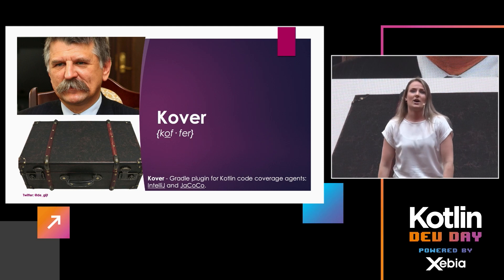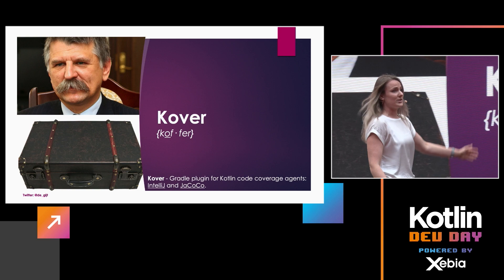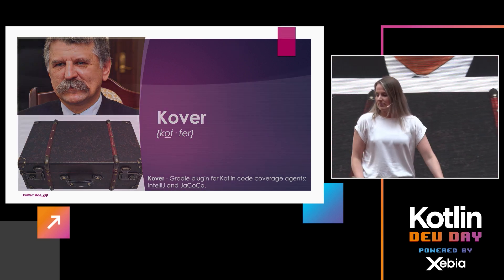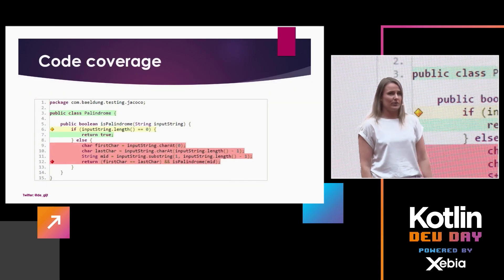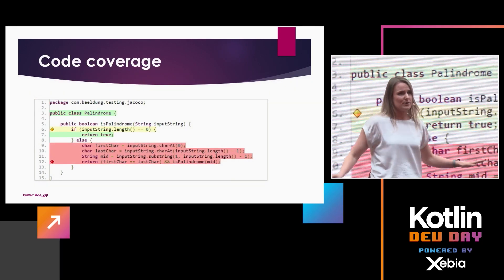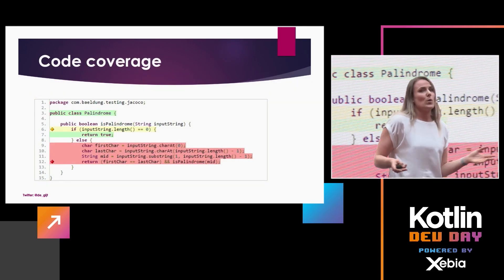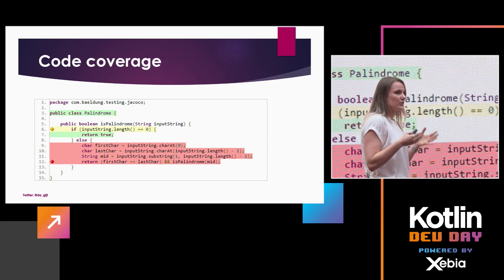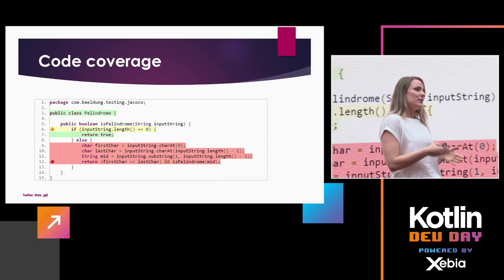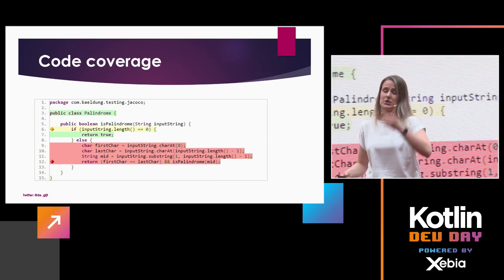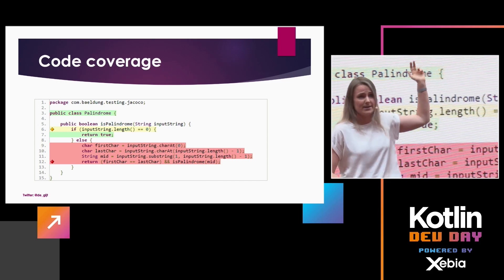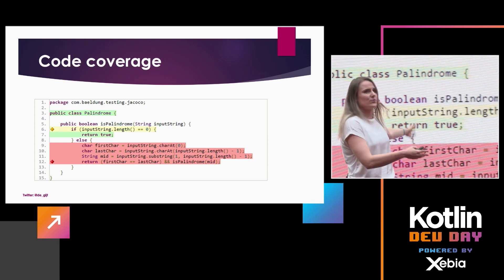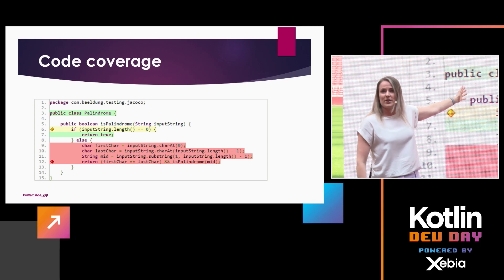But we're really going to talk about a great plugin for code coverage — the agents IntelliJ and JaCoCo. So what is Kover? Code coverage — let's start very basic. It's a way of verifying your project to see how many lines of code you have reached via your tests, and those tests can be unit tests, integration tests, contract tests, mutation tests, you name it.